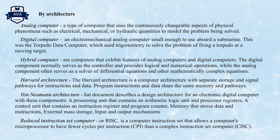Von Neumann Architecture describes the design architecture for an electronic digital computer with these components: a processing unit that contains an arithmetic logic unit and processor registers; a controller unit that contains an instruction register and program counter; memory that stores data and instructions; and external mass storage, input and output mechanisms.